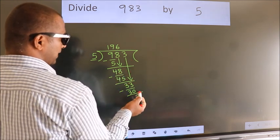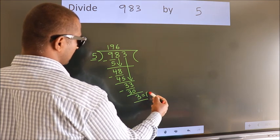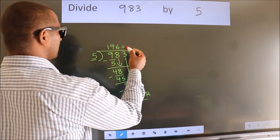No more numbers to bring down, so we stop here. This is our remainder, and this is our quotient.